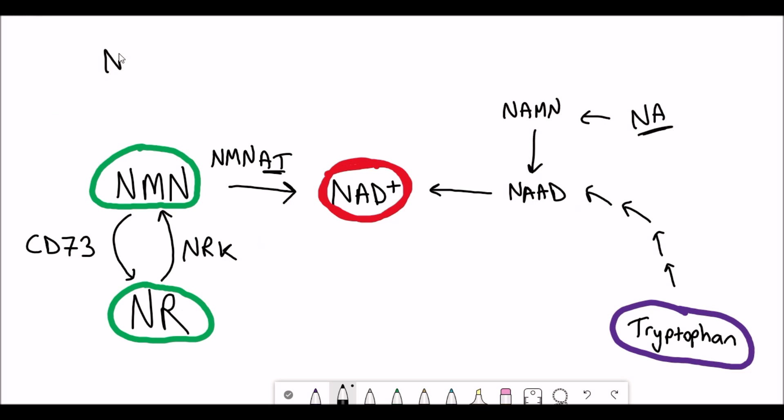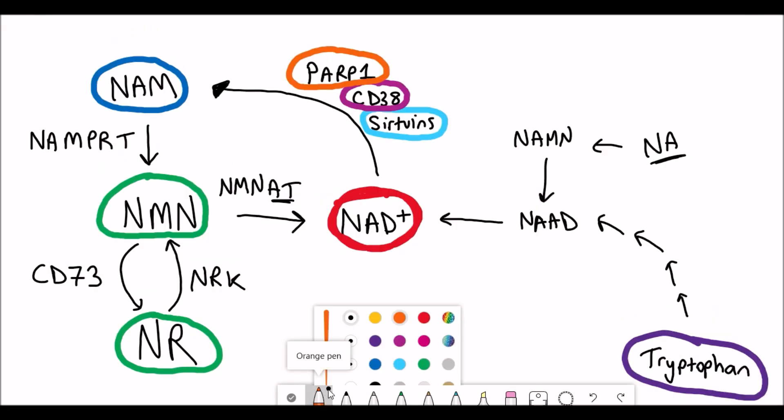I would recommend watching that video first before continuing with this one, but in case you don't want to, and also because I go into the synthesis in last week's video and you've already forgotten, I have drawn out the synthesis pathway here. We can see that NMN is converted to NAD+, which is the main thing to point out. NAD+ is then consumed, for example by three enzymes - Parp1, CD38 and Sirtuins - and converted to nicotinamide or NAM.